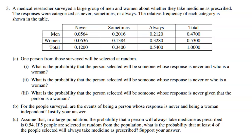A medical researcher surveyed a large group of men and women about whether they take medicine as prescribed. The responses were categorized as never, sometimes, or always. The relative frequency of each category is shown in the table. We have men and women on the left side, and across the top we have how they take their prescription — always, sometimes, or never.